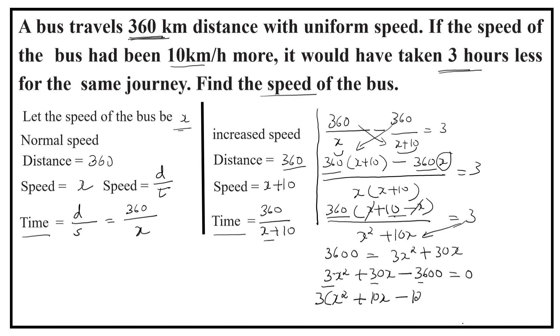3 is a common factor here. Bring it out. Here, we get the equation x square plus 10x minus 1,200 is equal to 0.